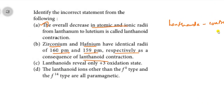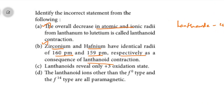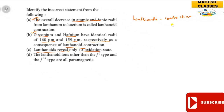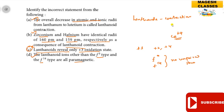Statement C: lanthanides reveal only the +3 oxidation state — this is incorrect, because the common oxidation state is +3, but some lanthanides show +2 and +4 states (e.g., cerium shows +4). Statement D: lanthanides other than f⁰ and f¹⁴ configurations are paramagnetic — this is correct, as those configurations have no unpaired electrons. The incorrect statement is C, so the answer is C.